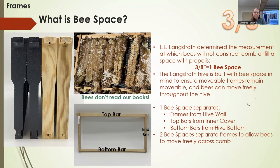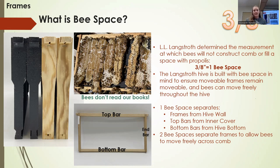Bee space — this is what Langstroth is famous for. He determined the space at which bees will not propolis or build comb: 3/8 of an inch. If there's too little space, they'll propolis everything shut; if there's too much space, they'll add comb and create a mess. Many places in your beehive are separated by a bee space — your frames are 3/8 inch from your hive wall, your top bars maintain bee space from the inner cover, and there are two bee spaces to allow bees to easily move between frames.